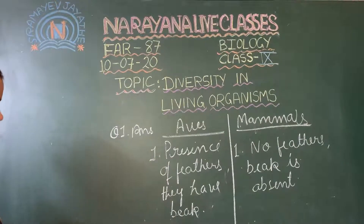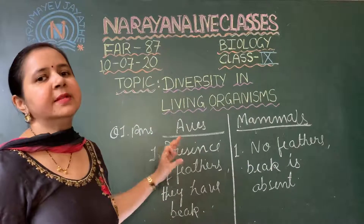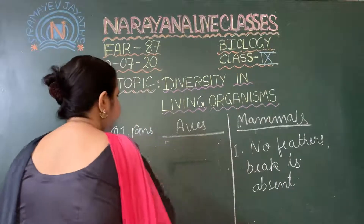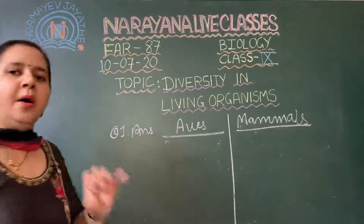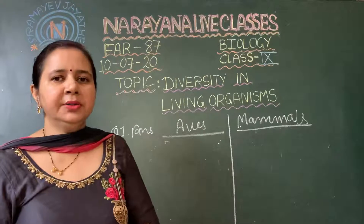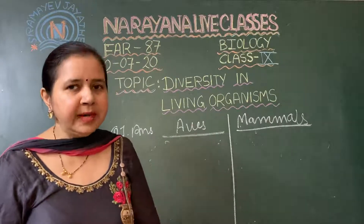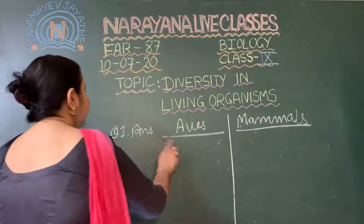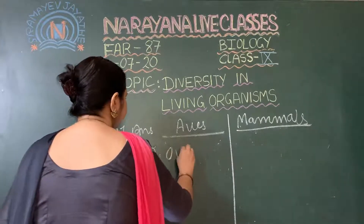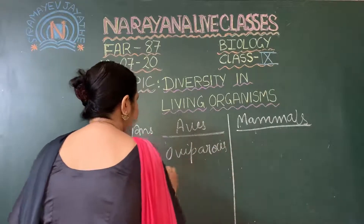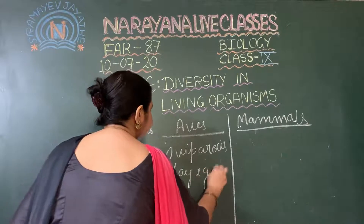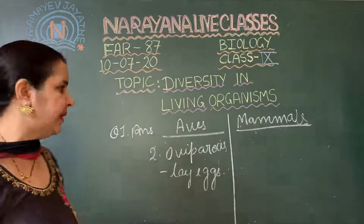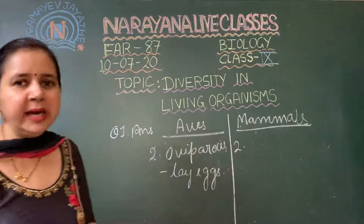The second point of difference is reproduction. Aves lay eggs, so they are oviparous. But almost all mammals give birth to their young ones, so they are viviparous. There are some mammals, like the platypus, that also lay eggs. So aves are oviparous, while mammals are mostly viviparous, though some are oviparous.